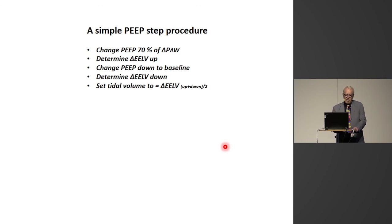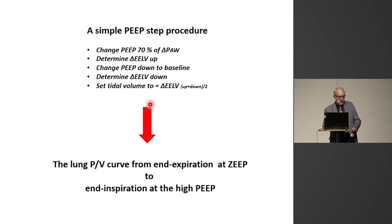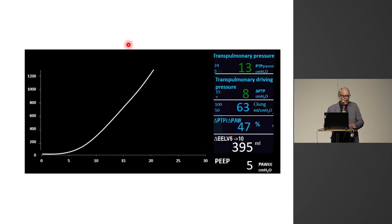By a simple PEEP step procedure, you change PEEP from baseline clinical PEEP and determine the lung volume increase over two minutes. Then change back to baseline and determine the lung volume decrease. Set the tidal volume equal to the delta EELV. When you do that, you can construct a lung PEEP curve from end expiration at the low PEEP to end inspiration at the high PEEP. After a PEEP change from 5 to 10, with a measured delta EELV of 395 milliliters, whatever you do — change tidal volume or PEEP — the transpulmonary pressure tidal PV curve will move along this lung curve.